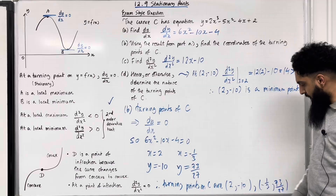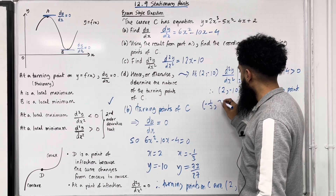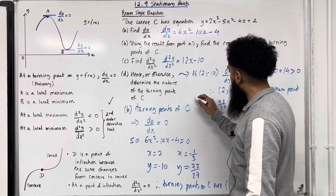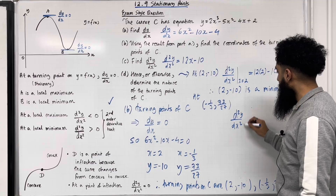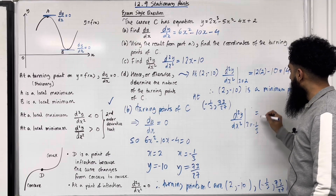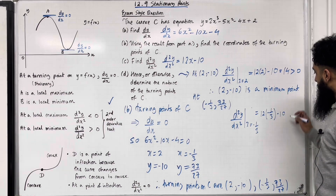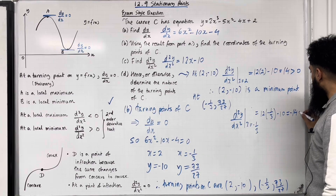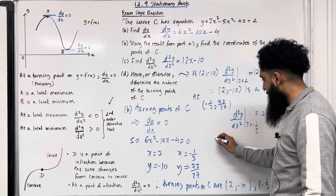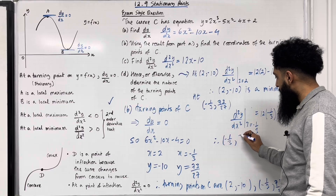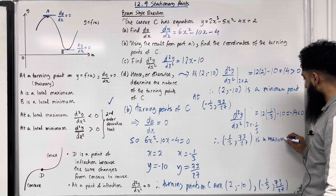For the second turning point (−1/3, 73/27): d²y/dx² at x = −1/3 is 12 × (−1/3) − 10 = −4 − 10 = −14, which is less than 0. When the second derivative is less than 0, the point is a maximum. Therefore, (−1/3, 73/27) is a maximum point.